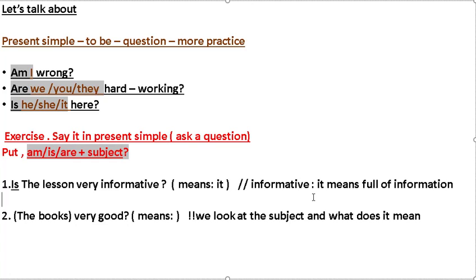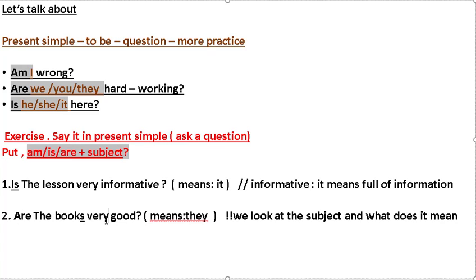Example: 'The book is very good.' When we have more than one book, 'books' is 'they', so we use 'are': 'Are the books very good?' We look at the subject to decide which verb to use.